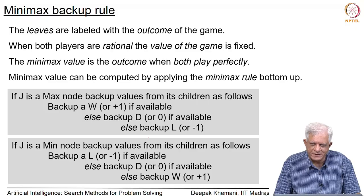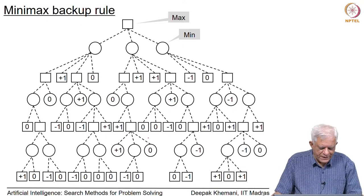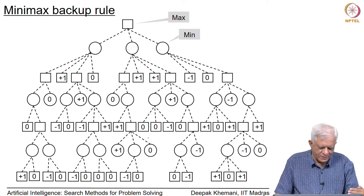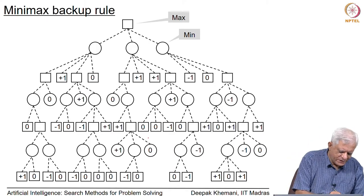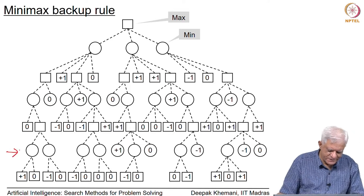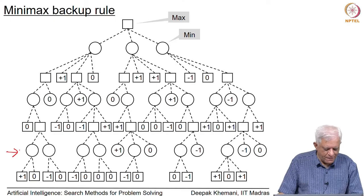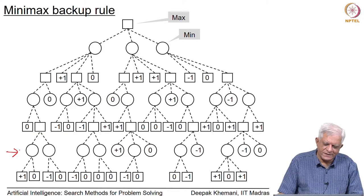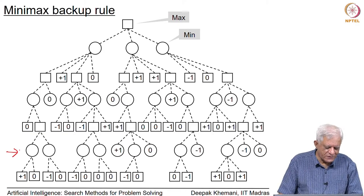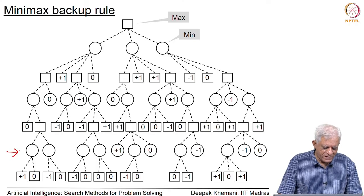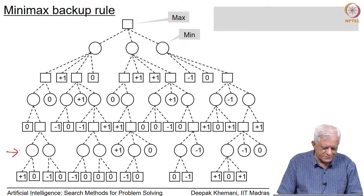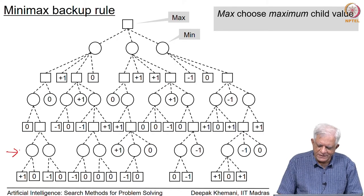Let us apply this to the small game tree we constructed, working from the bottom up. The lowest internal node has two choices: +1 and 0. Since it is a Min node, it will choose the minimum of the two values, which is 0. Its sibling has two choices: -1 and 0, so it will choose -1. In this fashion we back up values until all nodes get a value. Max chooses the maximum child value and Min chooses the minimum child value.